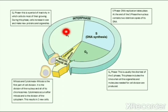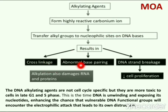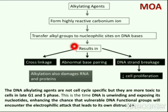This shows a normal cell cycle. The DNA alkylating agents are not cell cycle specific, but they are more toxic to cells in late G1 and S phase. This is the time DNA is unwinding and exposing its nucleotides, enhancing the chance that vulnerable DNA functional groups will encounter the electrophilic attack that leads to its destruction. In conclusion, alkylating agents form highly reactive carbonium ions which transfer alkyl groups to nucleophilic sites on DNA bases, resulting in cross-linking, abnormal base pairing, and DNA strand breaks — all leading to destruction of abnormal DNA.